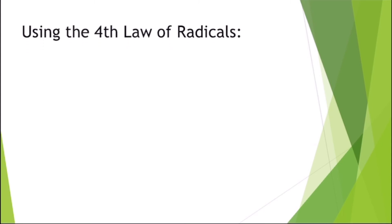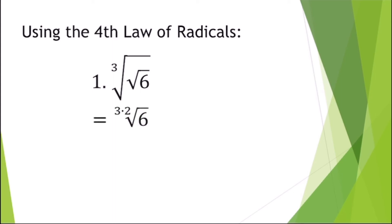Using the fourth law: cube root of square root of six. We simply multiply the indices because the fourth law uses multiplication of fractions on the exponents. The indices here are three and two, so three times two equals six. Therefore, the answer is the sixth root of six.